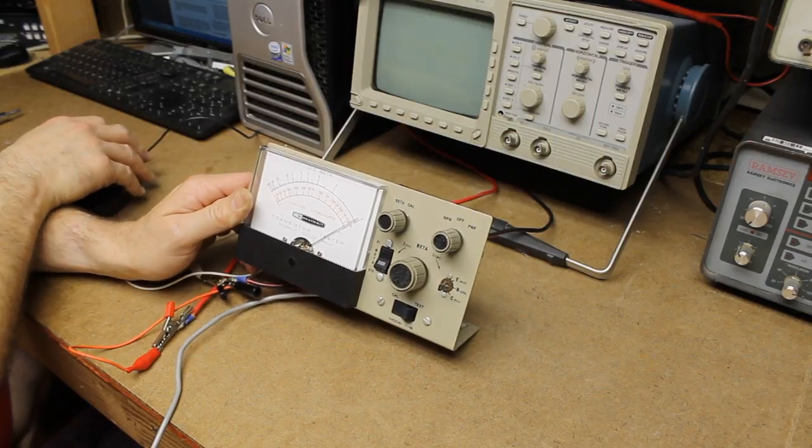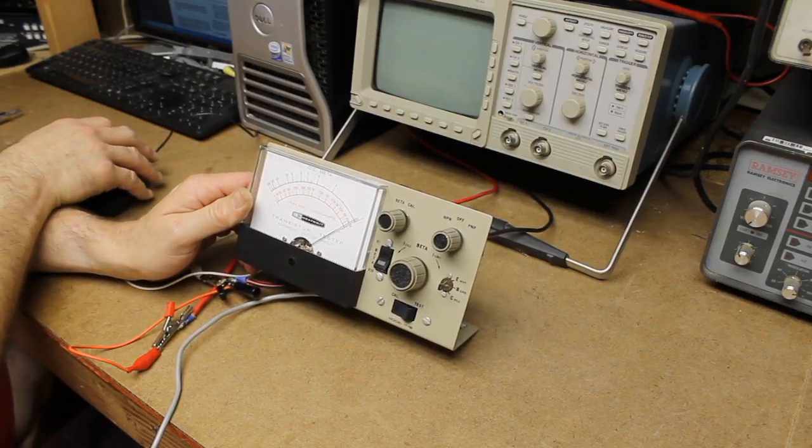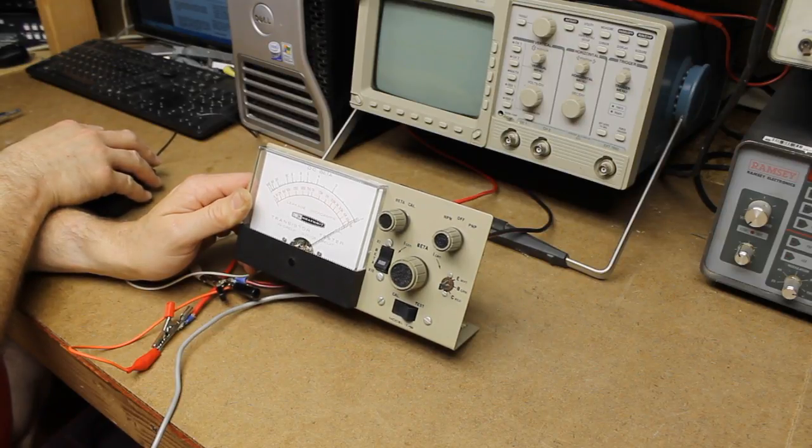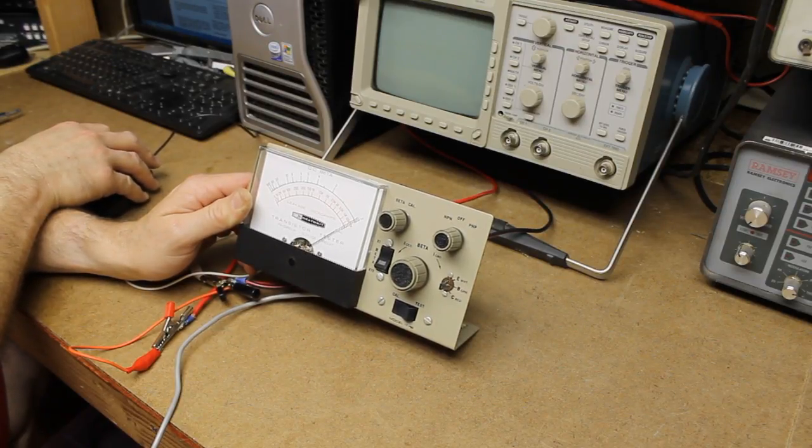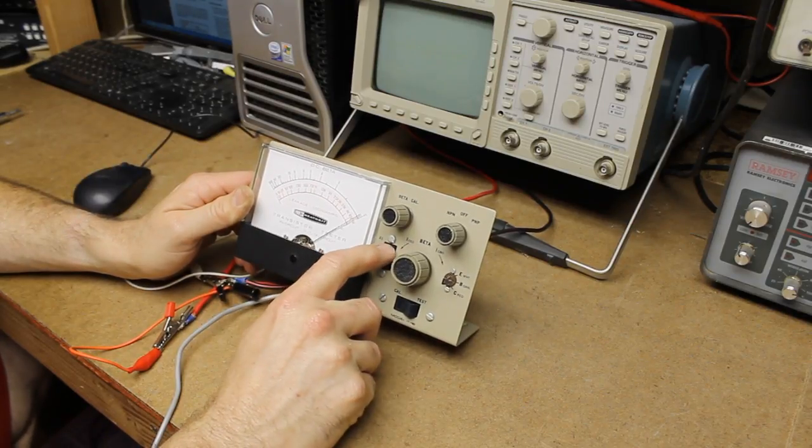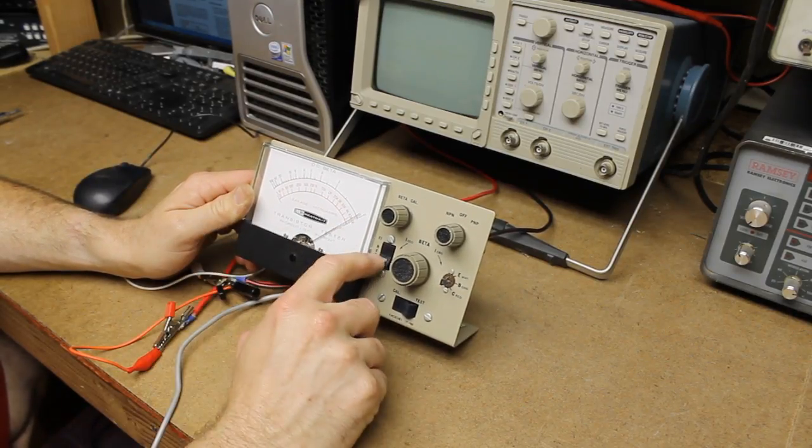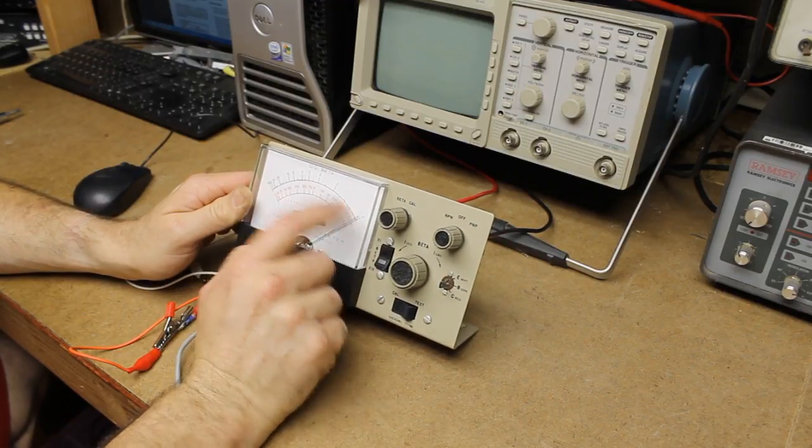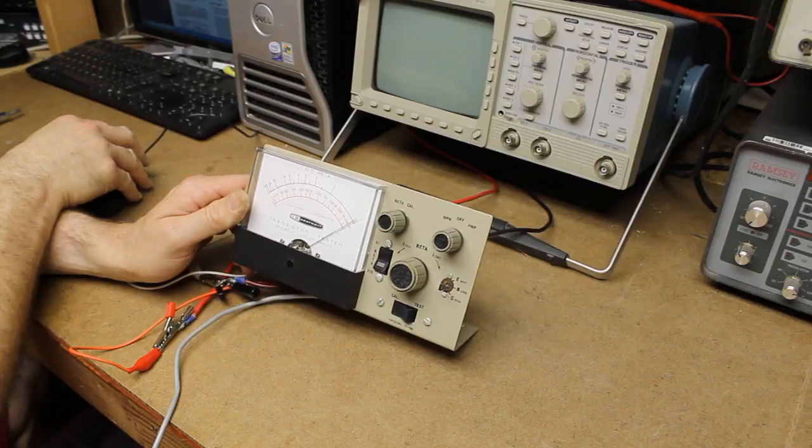For your typical transistors, RF-IF transistors, beta will be in the 2 to 50 range, power 10 to 100, audio 40 to 400. There's also a by 10 scale. If your needle swings too far, you can switch into by 10, and then your reading is no longer direct, it's the reading times 10, which is pretty standard.